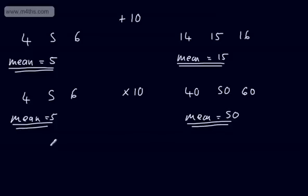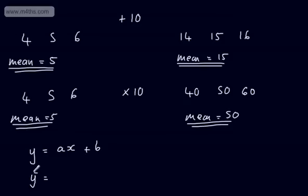This allows us to set up what we call linear coding. We can apply a linear transformation to make the numbers in our data set smaller, find the mean of the coded data, and then reverse the process to find the mean of the original data. In general, if we have Y = AX + B as a linear coding — X being the original data set and Y being the coded one — we can say Ȳ, the mean of our coded data, will be equal to A multiplied by X̄, the mean of the original data, plus B.